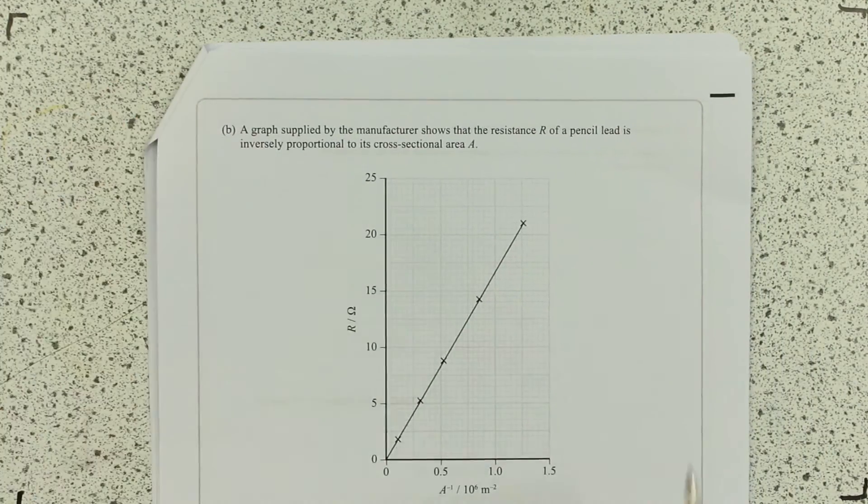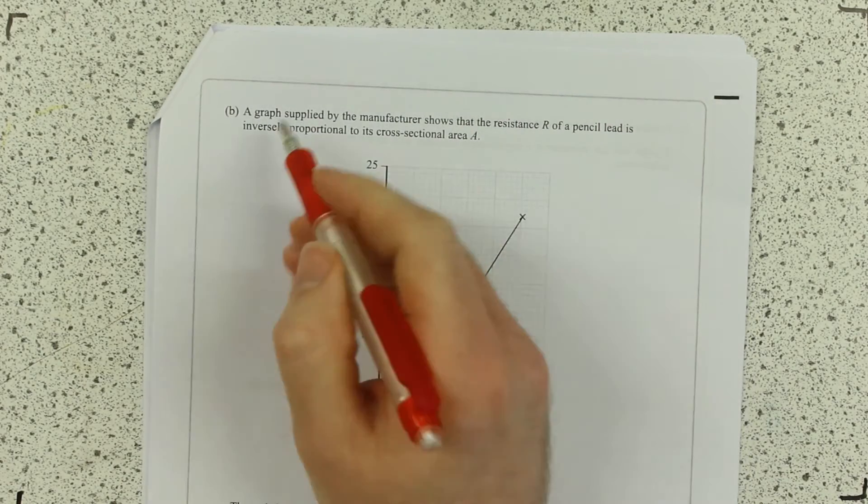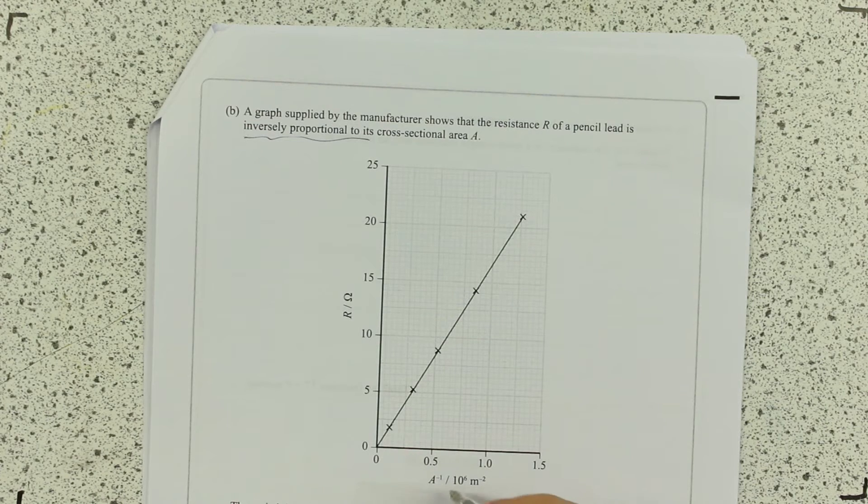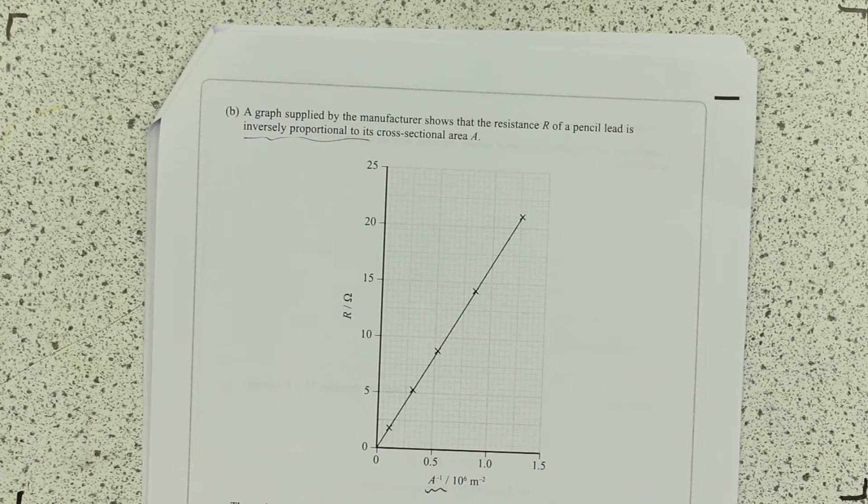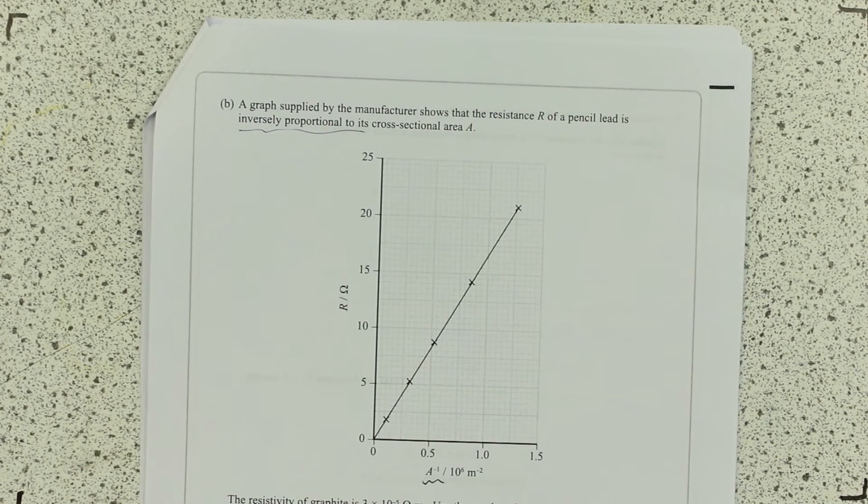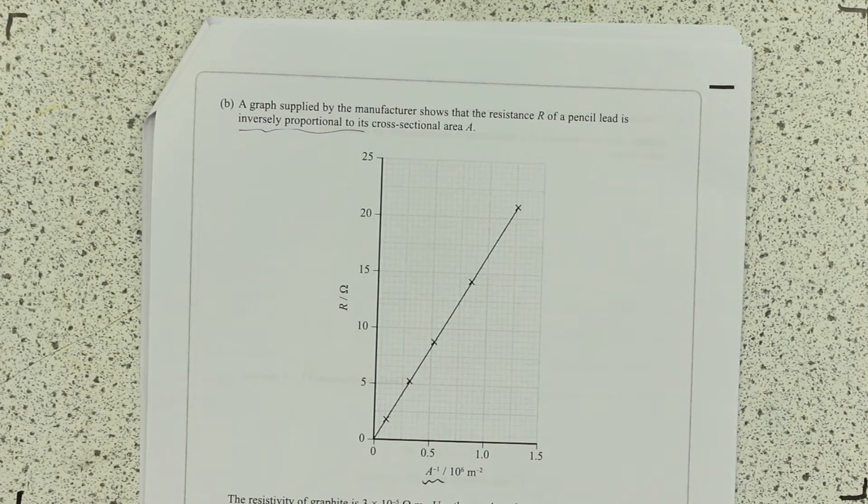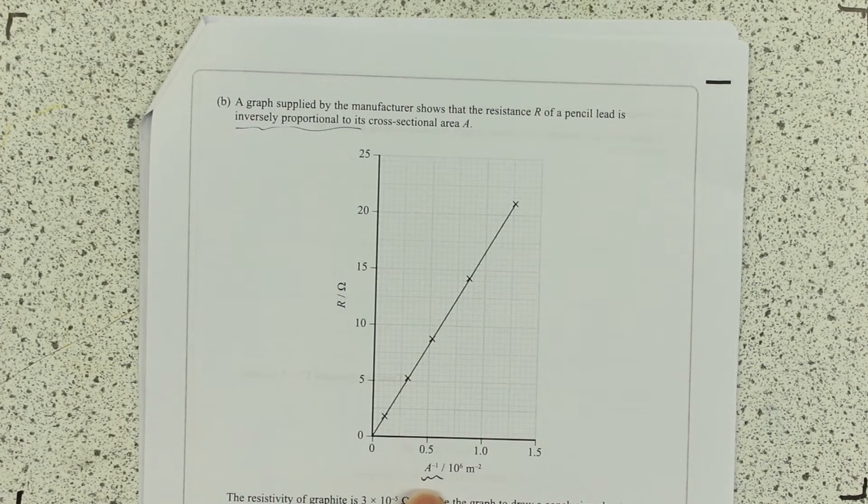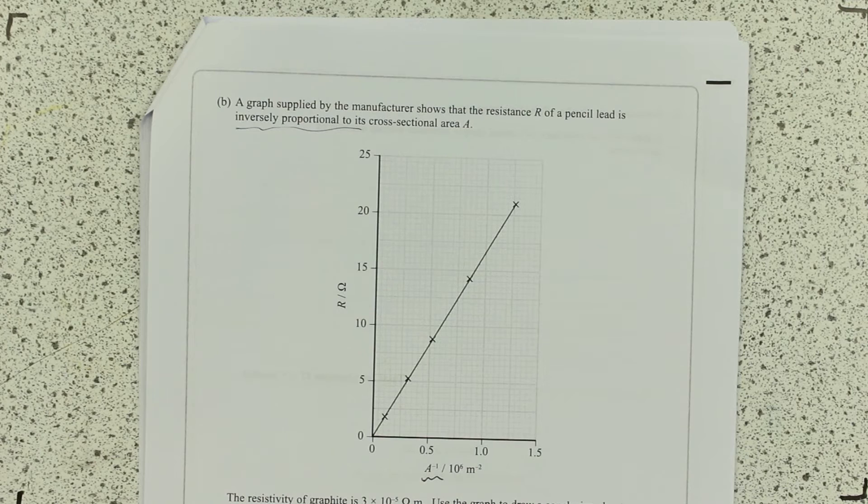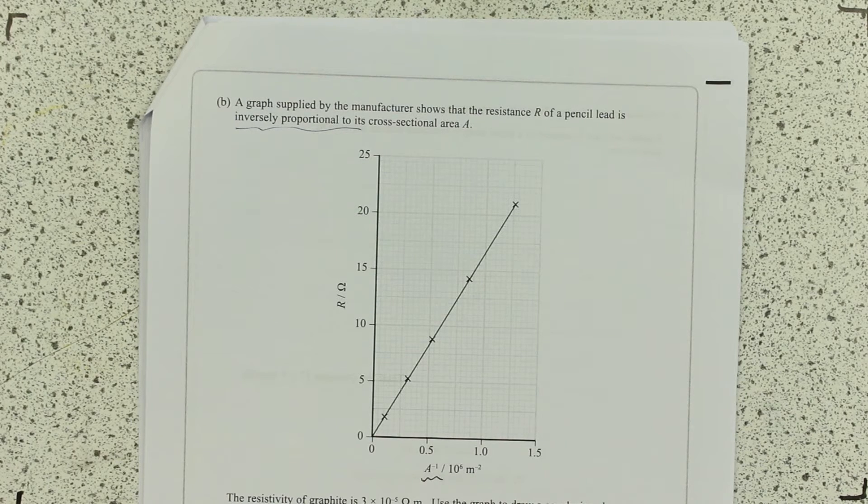A graph supplied by the manufacturer shows the resistance R. A pencil lead is inversely proportional to its cross-sectional area. Now that's a proportional graph, isn't it? Look really closely at the axes there. I think that's the errors that they're expecting people to make. You can still get some marks if you don't spot that. But obviously you'll want to not do that. Resistivity of graphite is this. Use the graph to draw a conclusion about the effect of adding clay to graphite.